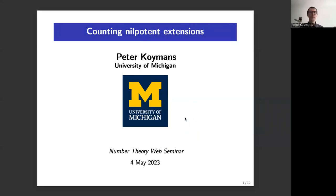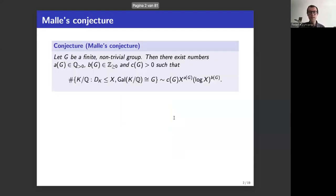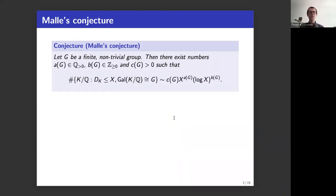It's really an honor to speak here. I'll say a few words about counting nilpotent extensions. The main driver is Malle's conjecture, which concerns the following statement: let G be a finite material field group. Malle's conjecture asks about the count of number fields with discriminant up to X and with Galois group isomorphic to G.